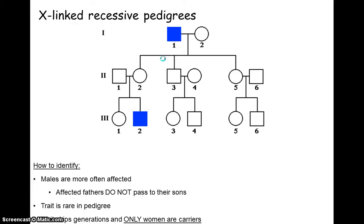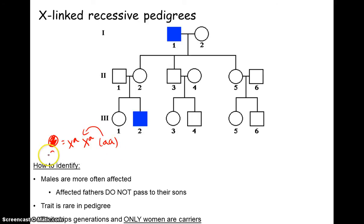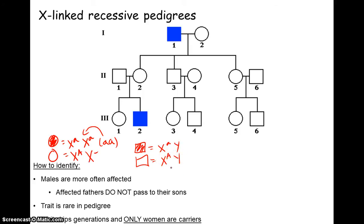Our final mode is X-linked recessive. We know this because the trait appears almost exclusively in males, without the pattern of fathers passing the trait to daughters. Affected fathers don't pass it to their sons at all. The trait is rare and we see skipping of generations. If any females were affected, they would be X little a, X little a. Unaffected females are X big A, X something — we'll need to infer the second allele. Males are either X little a, Y if affected, or X big A, Y if unaffected. Males only have two options because they only have one copy of the X.